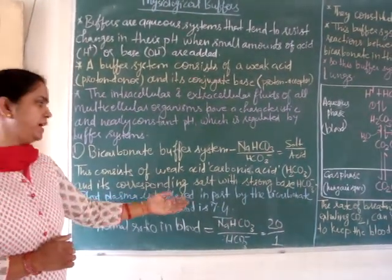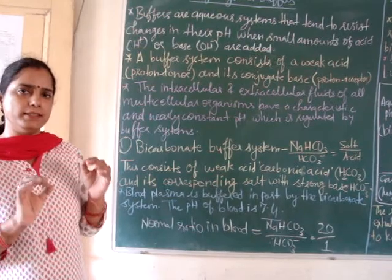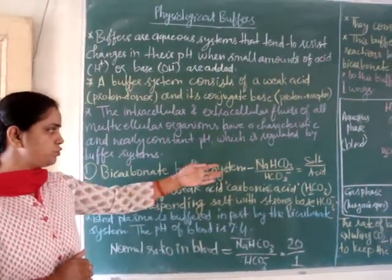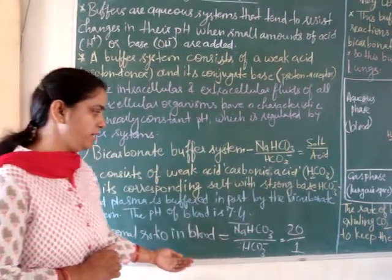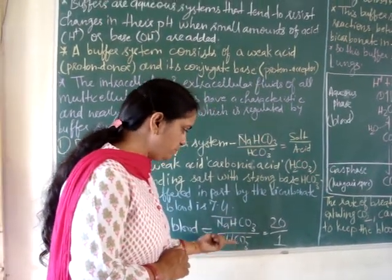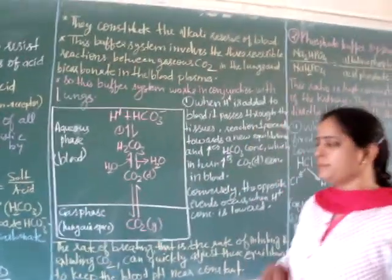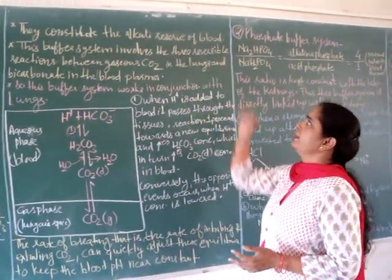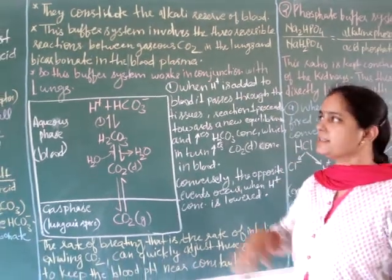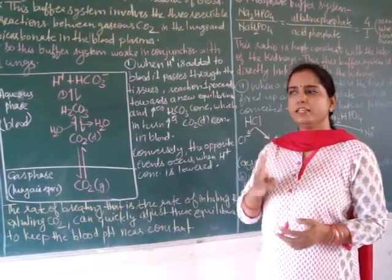Blood plasma is buffered in part by this bicarbonate buffer system, and the pH of blood is slightly alkaline at 7.4, which is maintained nearly constant by this system. The ratio of the two components of the bicarbonate buffer system in blood plasma is around 20 to 1 — sodium bicarbonate 20 to bicarbonate 1. This means the alkali part is more, constituting the alkali reserve of blood. This buffer system involves reversible reactions between gaseous carbon dioxide in the lungs and bicarbonate in the blood plasma, maintaining pH through three reversible equilibria.